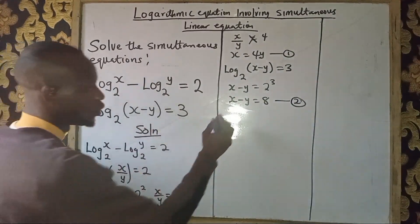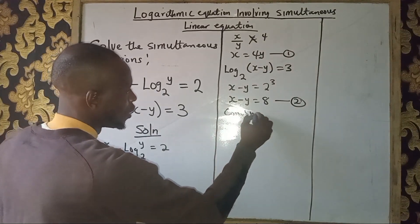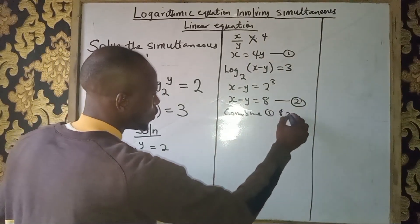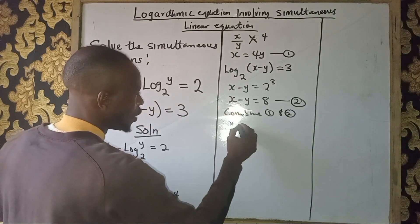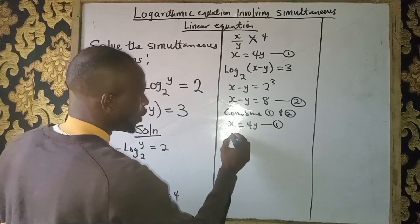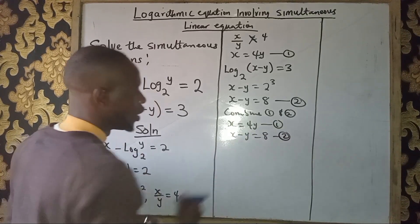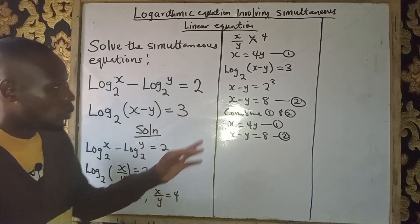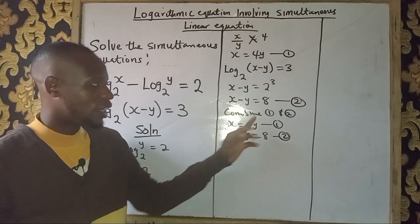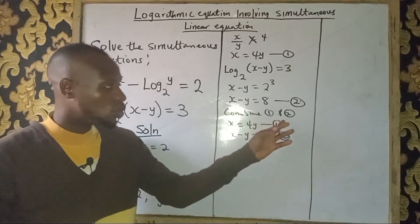So you combine equations 1 and 2. We have x equals 4y as equation 1, and x-y equals 8 as equation 2. From equation 1, x equals 4y, so we can substitute equation 1 into equation 2 to get the value of y.